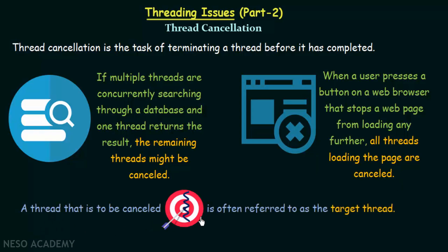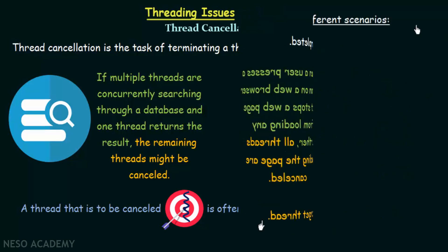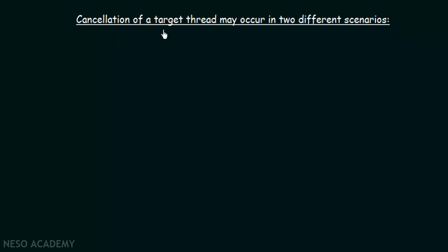A thread that is to be cancelled is often referred to as a target thread. Cancellation of a target thread may occur in two different scenarios, and we will see which one is better and provides a more stable computation.